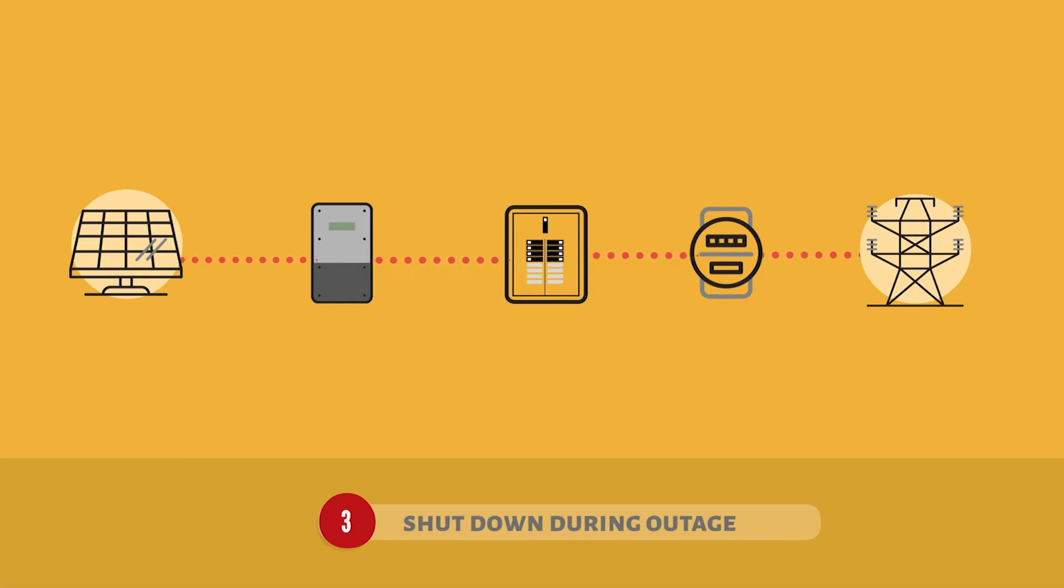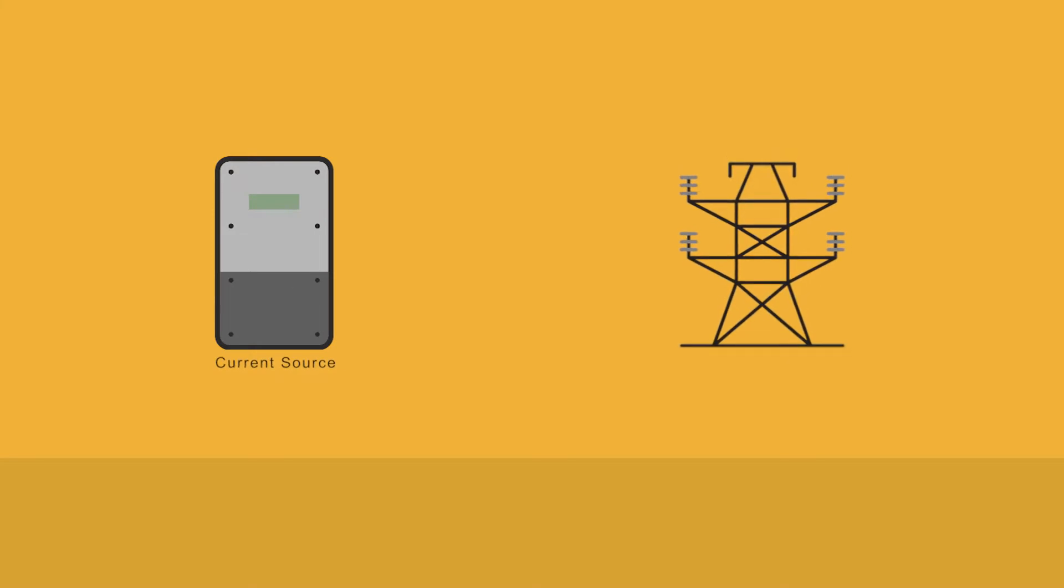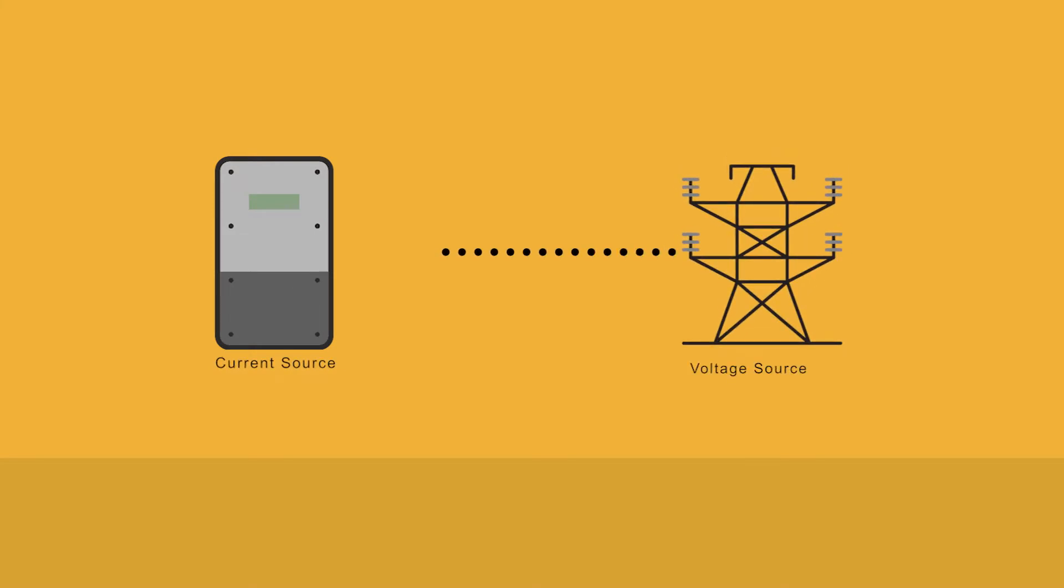And third, in the event of a power outage, the grid-tied inverter is required to shut down and cease solar production. As noted, a voltage source is required for the grid-tied inverter to work. This is because grid-tied inverters are a current source, meaning they are not designed to create their own voltage signal.